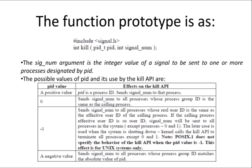With the PID you can find the process, and with the signal number you can identify the signal, then send that signal to the process where the PID matches. The possible values of the PID used by the kill API: if the PID value is a positive value, the signal number is sent to that specific process.